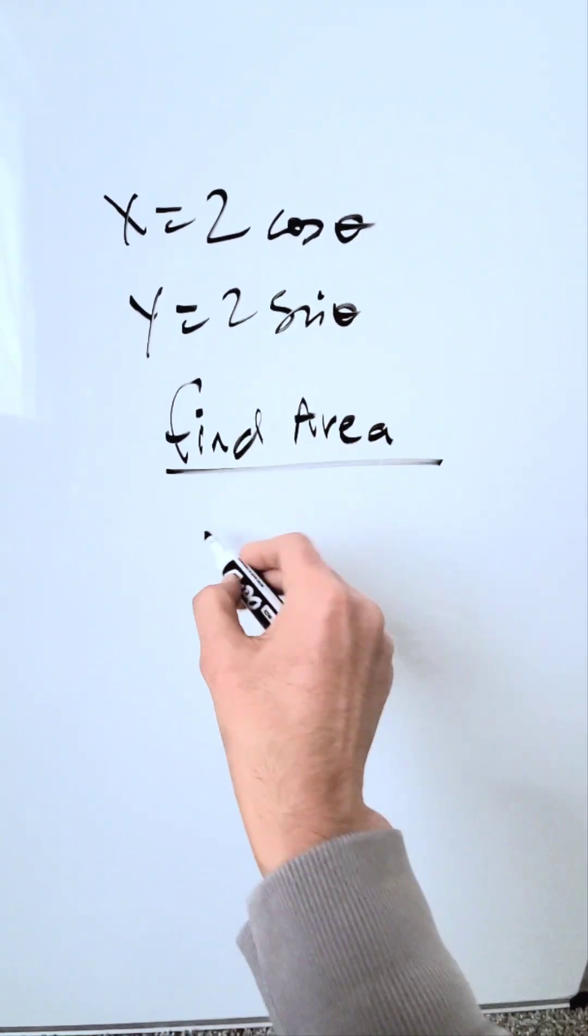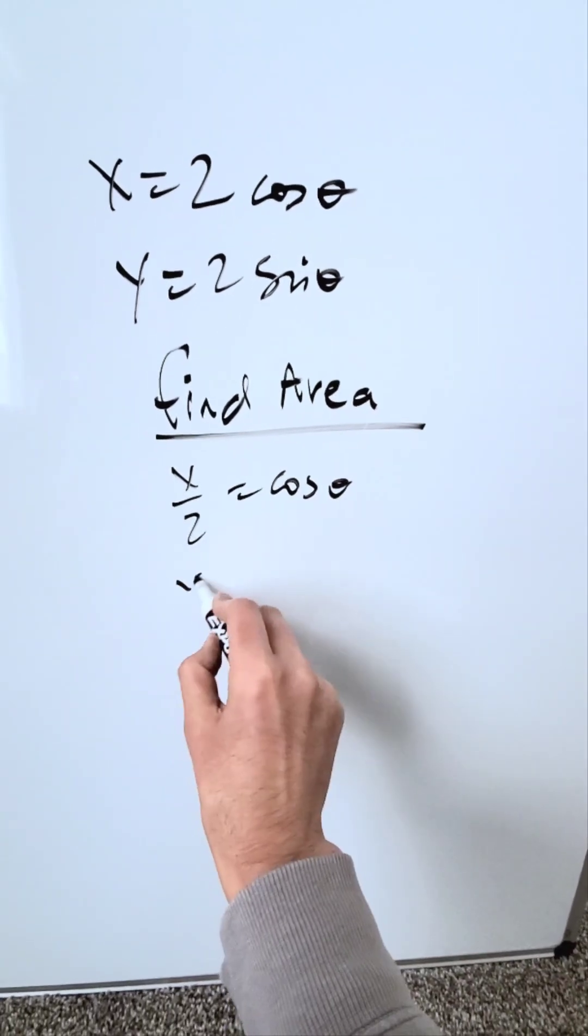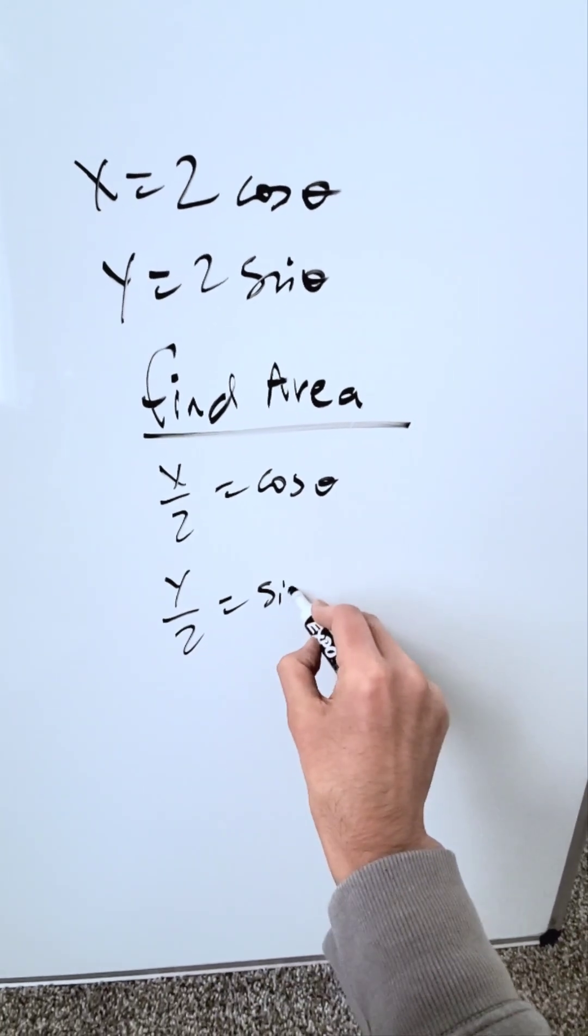How will I do that? I'll push the 2 on the other side. I will have x over 2 is equal to cosine theta. Likewise, I have y over 2 is equal to sine theta.